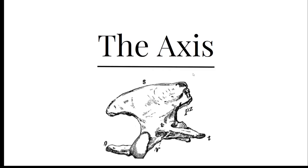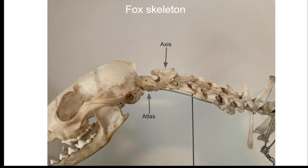Welcome back to Bone of the Week. This time I'll be talking about the axis. The axis is the 2nd cervical vertebra, articulating with the atlas in front and the 3rd cervical vertebra in the back. Due to being the 2nd cervical vertebra, it is sometimes referred to as C2.